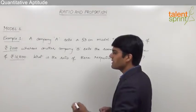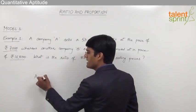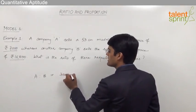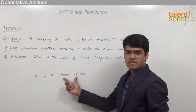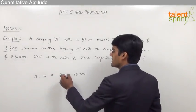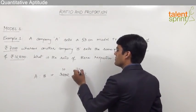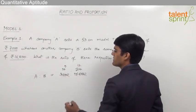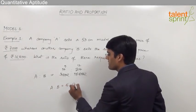As discussed earlier, ratio is nothing but a comparison. So the price of A to the price of B equals 7000 is to 16800. By simplifying, we get 7×1000 and 7×2400, which can be further simplified as 5 is to 12. So the ratio of the prices of A and B is 5:12.